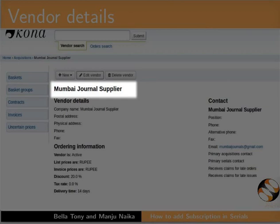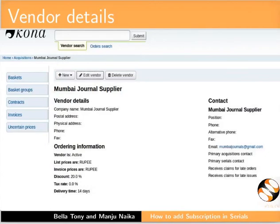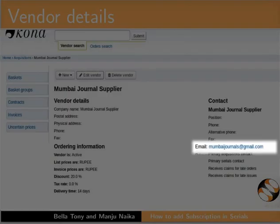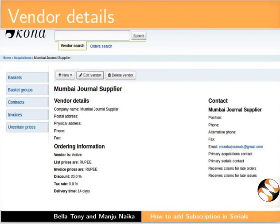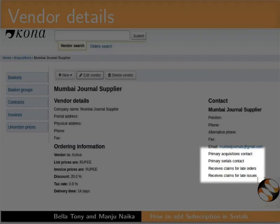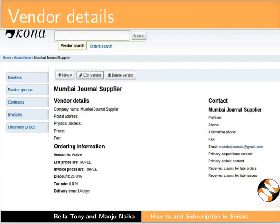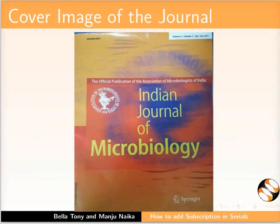I will give the name Mumbai Journals Supplier. Then, I have added an email ID, MumbaiJournals at gmail.com. Remember to check the checkboxes for primary acquisitions contact, primary serials contact, contact about late orders and contact about late issues. These details will be used later in this tutorial. Likewise, you have to fill in the details of your vendor. Here is the screenshot of the journal that we have to subscribe. All details shown here are the ones I will be entering in my Koha interface.